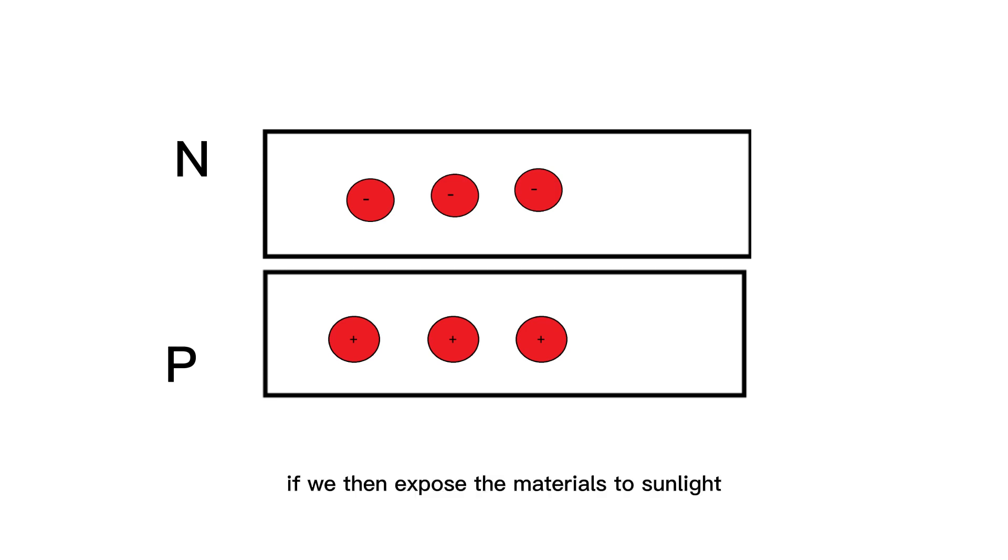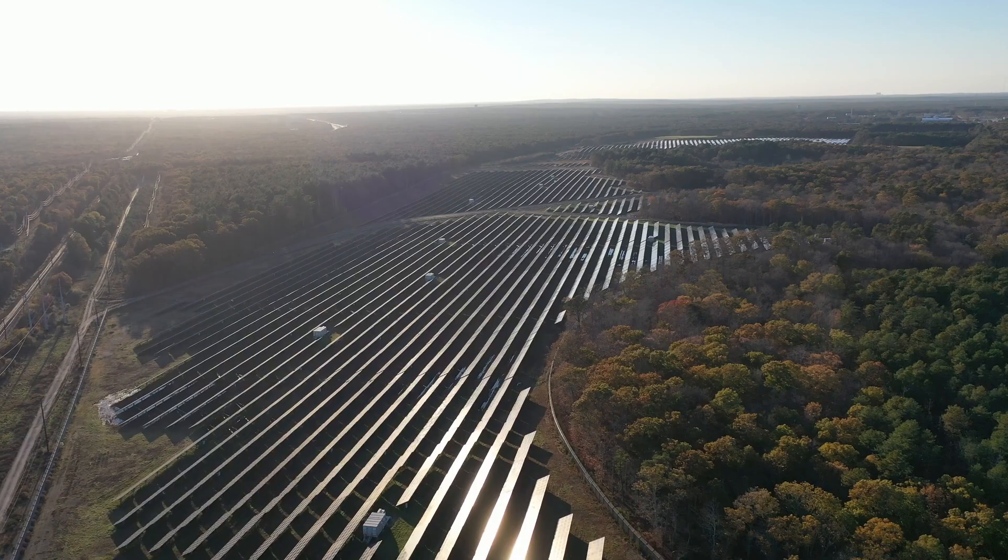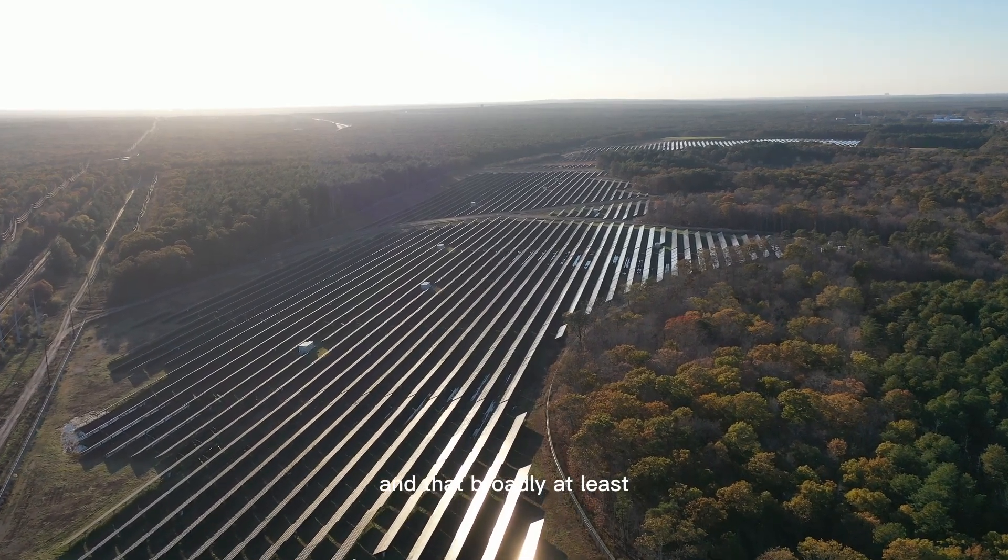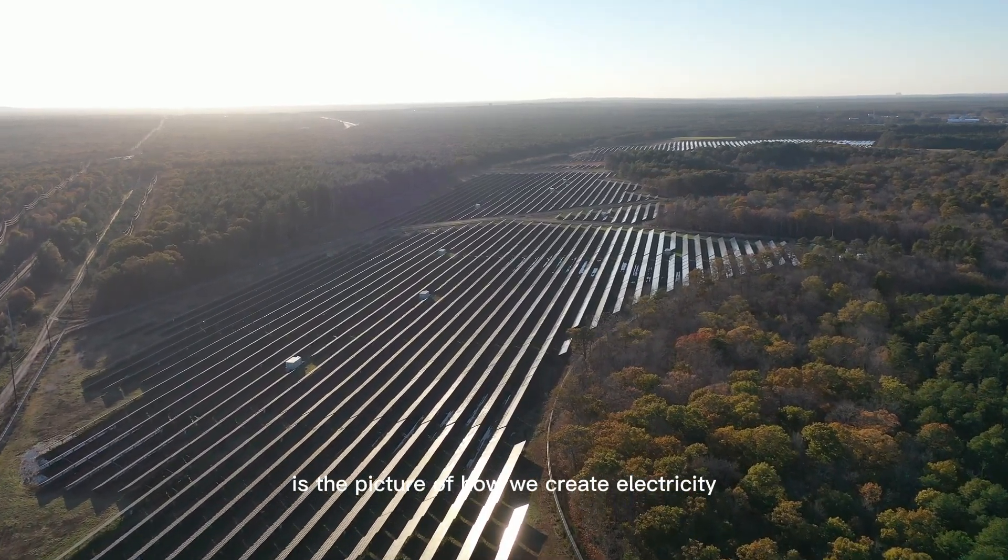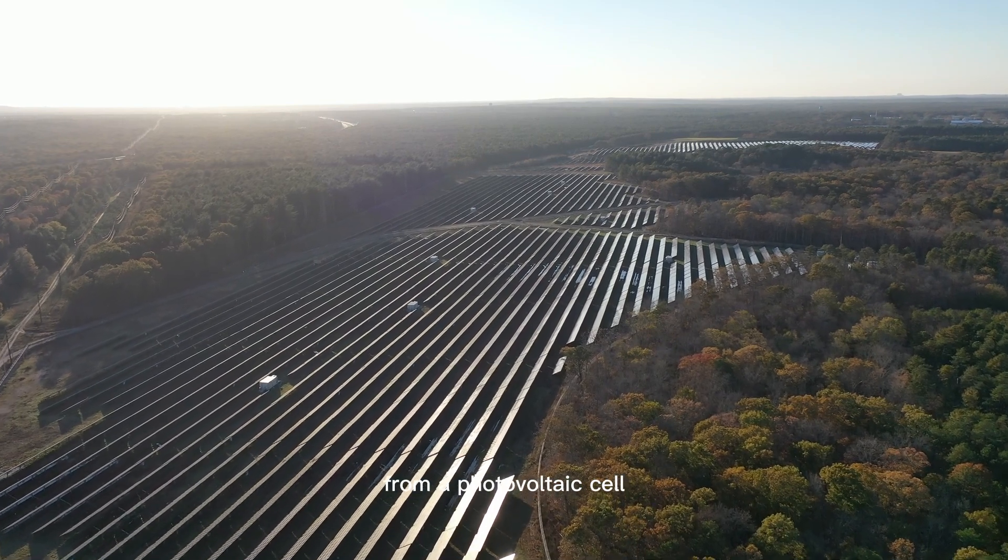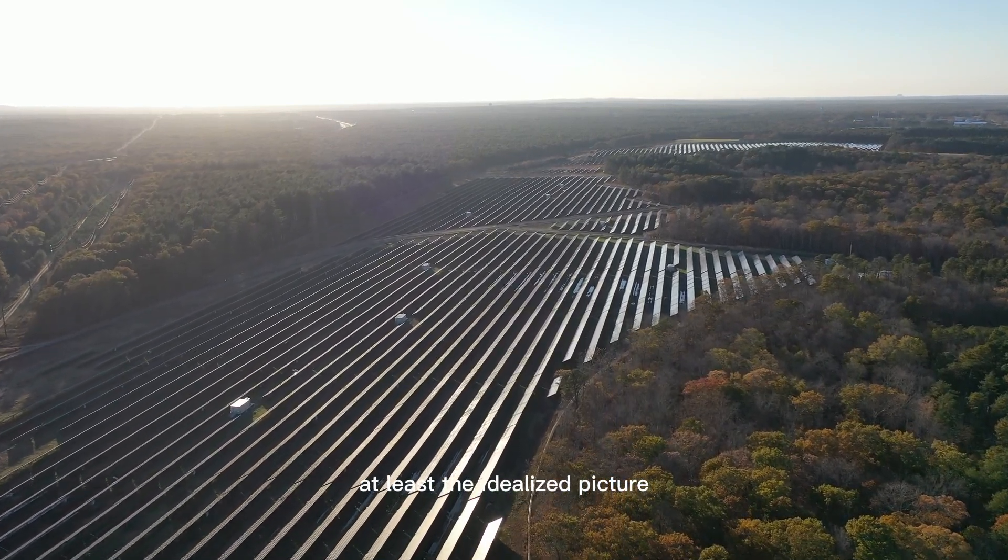If we then expose the materials to sunlight, the light can break apart this neutral region, creating electron-hole pairs or excitons. As they are charged, they get pushed out of this electrically neutral region to either side where they can be collected by an electrode and then recombined later after doing some useful work for us. And that broadly is the picture of how we create electricity from a photovoltaic cell, at least the idealized picture.